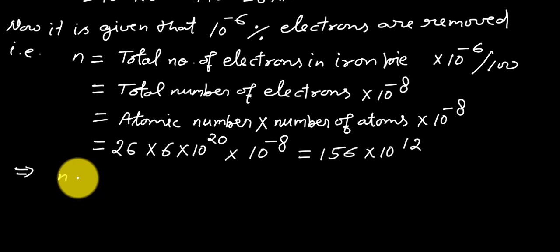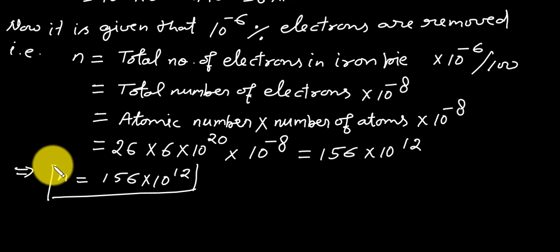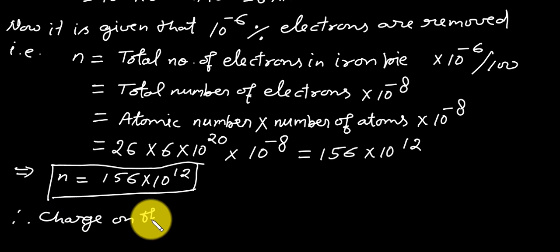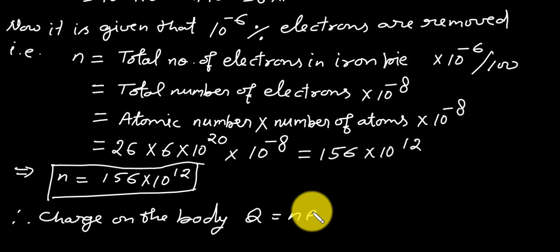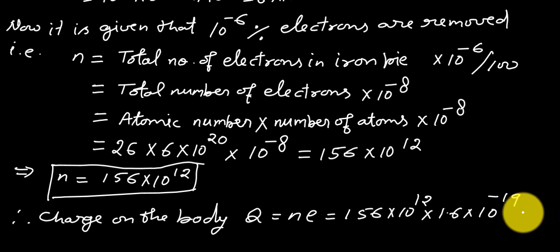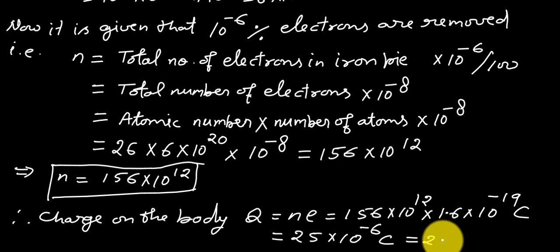It will be equal to 156 × 10^12. So, the value of N is N = 156 × 10^12. Now, we can easily calculate the charge on the given body. The charge Q = Ne. The value of N is 156 × 10^12 and the value of e is 1.6 × 10^-19 coulomb. It will be equal to 25 × 10^-6 coulomb, that is 25 micro coulomb.